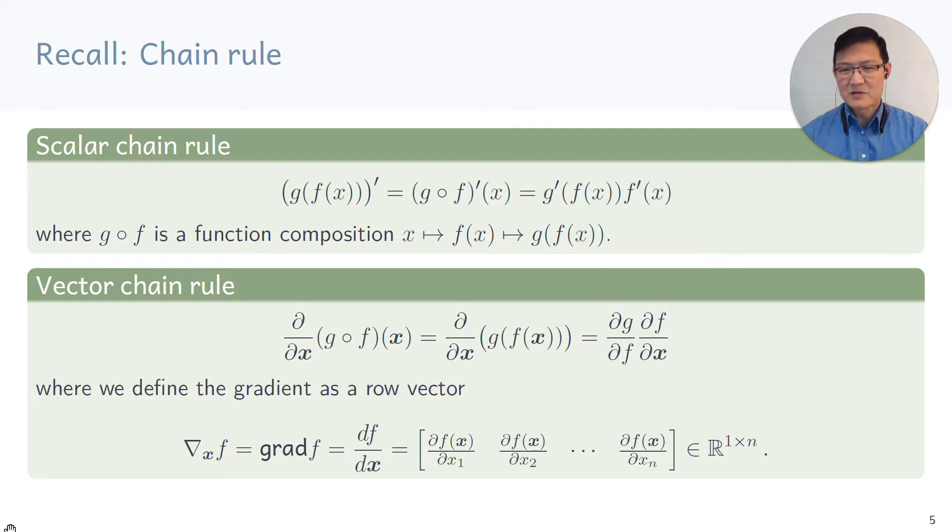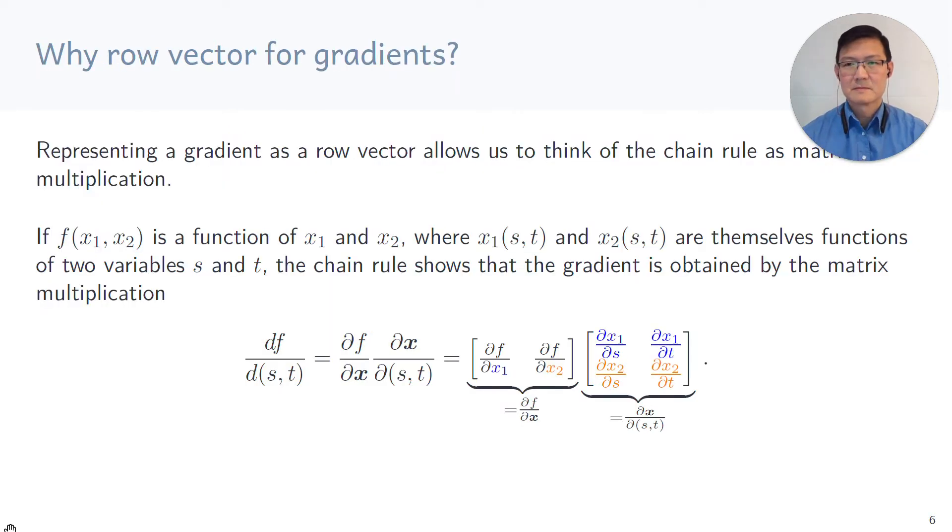For vector value chain rules, we have the same result. And if the value of f is a scalar value function, so that there's only one dimensional output of the composed function f and g, then we write down this gradient as a row vector.